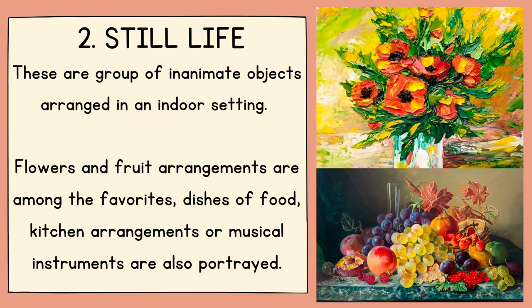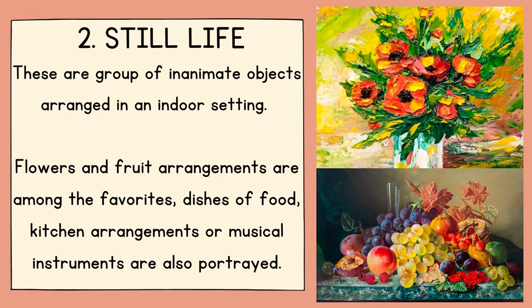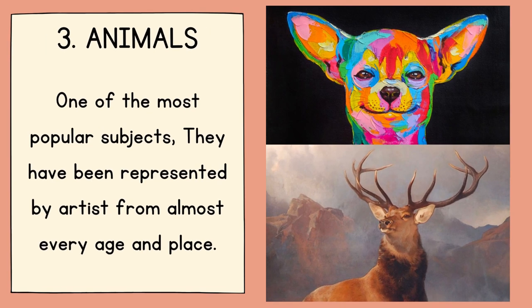The second subject is still life — groups of inanimate objects arranged in an indoor setting. Flowers and fruit arrangements are among the favorites, along with dishes of food, kitchen arrangements, or musical instruments. Artists usually arrange the objects to show particular human interests and activities. The third subject is animals. One of the most popular subjects, animals have been represented by artists from almost every age and place.